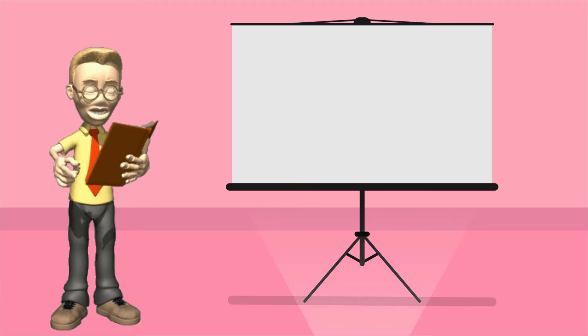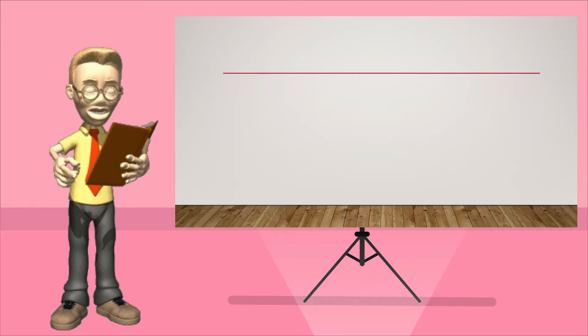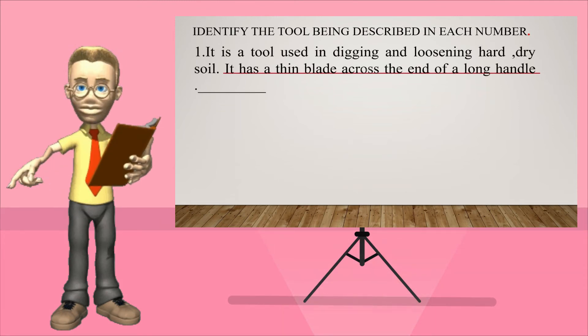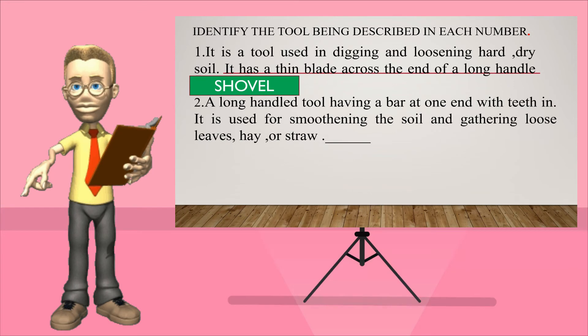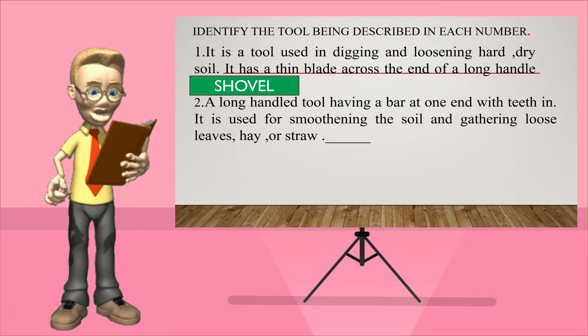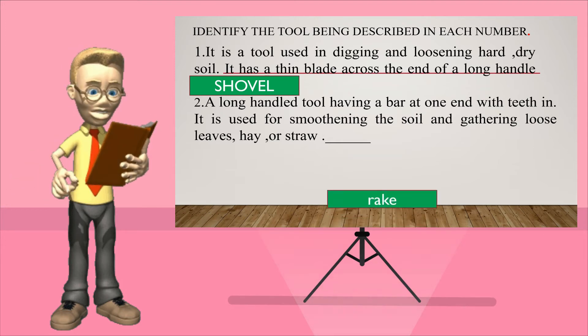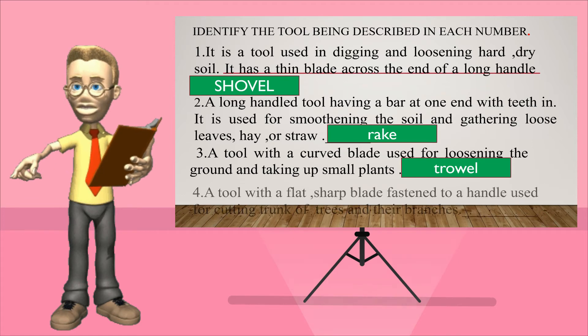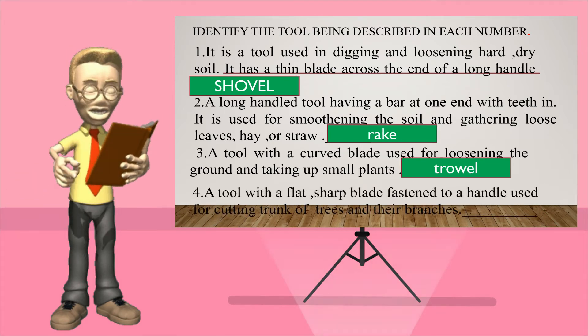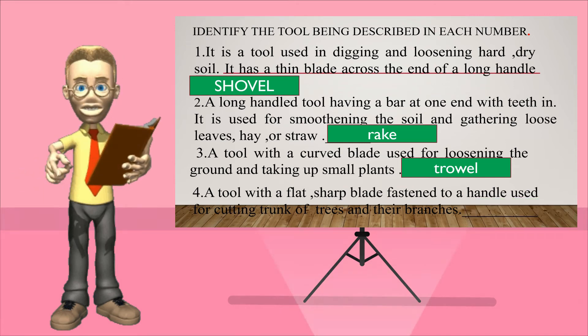This time you're going to identify the tool being described. Number one, it is a tool used in tilling and loosening hard and dry soil. It has a thin blade across the end of a long handle. Correct. Number two, a long handle tool having a bar at one end with teeth. It is used for smoothing the soil and gathering loose leaves or straw. The correct answer is rake. Next, a tool with a curved blade used for loosening the ground and picking up small plants. What is the answer? Trowel.